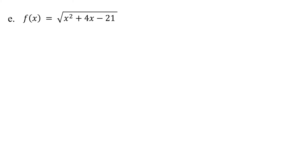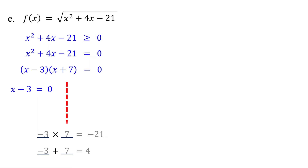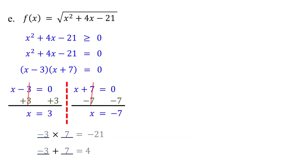The next one is a bit challenging — it requires solving a quadratic inequality using a sign chart method. For this function to be defined, the trinomial must be greater than or equal to zero. First, change the inequality to an equation and solve for x using the factoring method. Find two numbers that multiply to give negative 21 and add up to 4 — these are negative 3 and 7. So when factored, it becomes x minus 3 times x plus 7, giving x equals 3 or x equals negative 7.